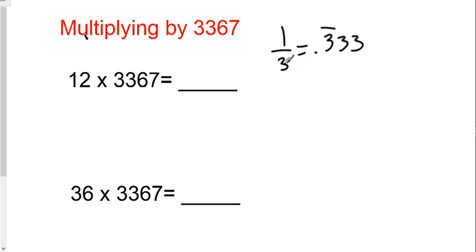your brain needs to think divide by 3. So what you're going to do is divide the non-3367 number by 3, and you get 4. You're going to write 4, 0, 4, 0, 4.